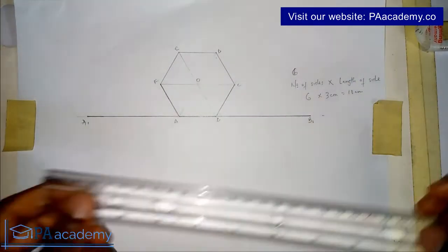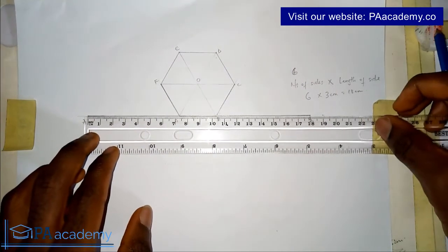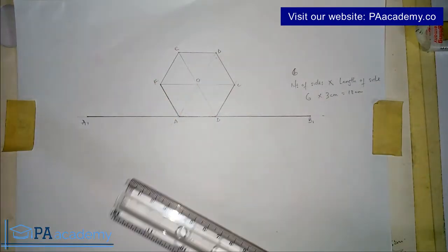So now I have already extended it. So this line from A1 to B1 is giving us 18 cm as you can see. So this 18 cm represents the total length of all the sides. So what do we do next?